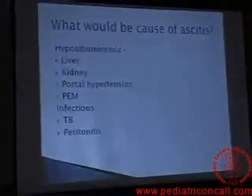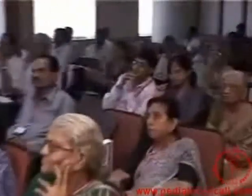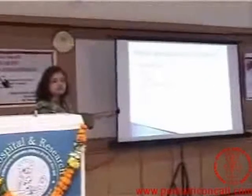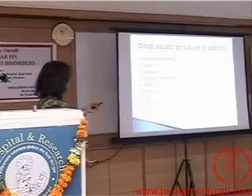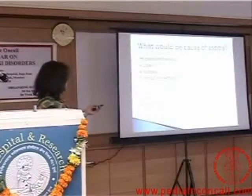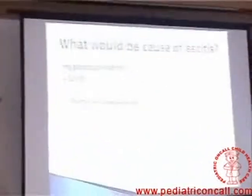Now let us rule out various things. TB going on for eight months without spreading elsewhere — unlikely. Same thing for peritonitis. Liver is also unlikely — jaundice is absent, eight months going on. Kidney is down — it comes with generalized edema, not starting with ascites. PEN doesn't start with ascites, it would start as generalized edema. So PEN is out, infection is out, TB is out, peritonitis is out, kidney is also out. That leaves you with liver and portal hypertension.